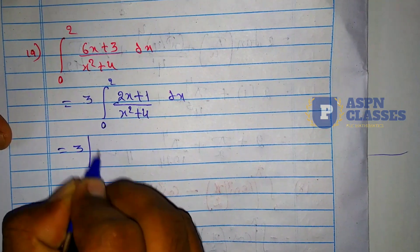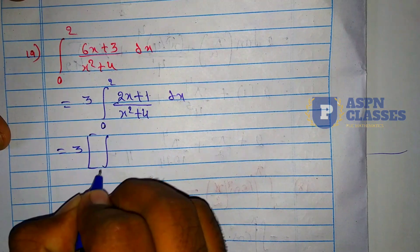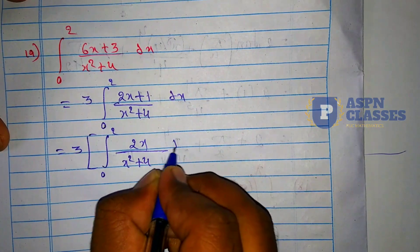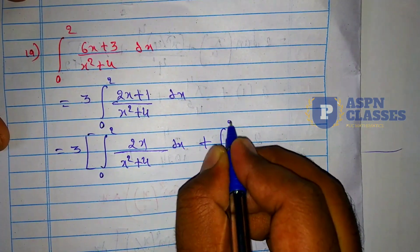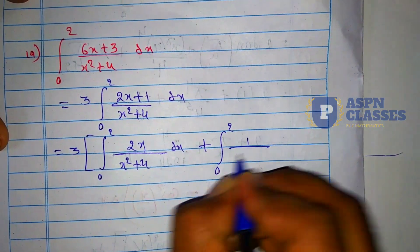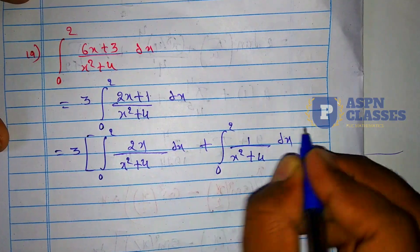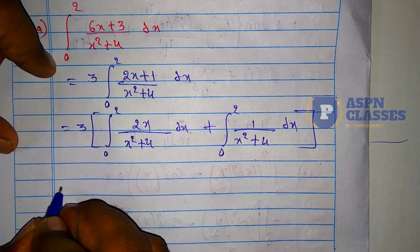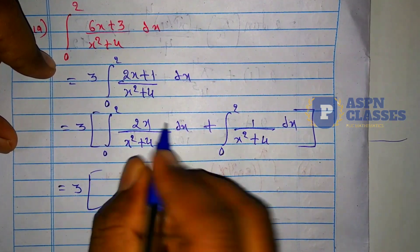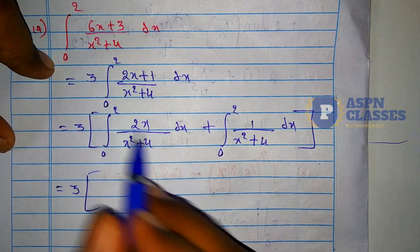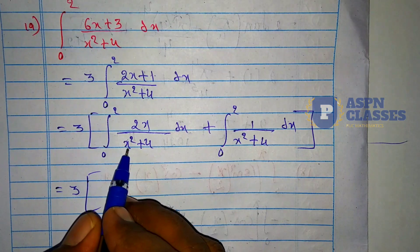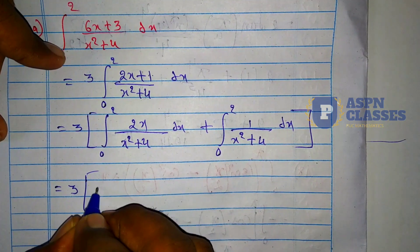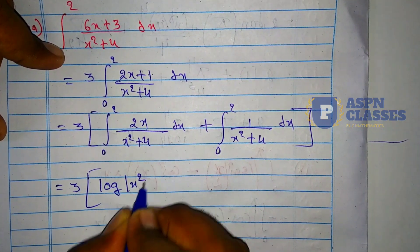We split the integral into: 3 times integral from 0 to 2 of [2x/(x²+4)]dx, plus 3 times integral from 0 to 2 of [1/(x²+4)]dx. For the first part, since the derivative of x²+4 is 2x, this integrates to log|x²+4|. For the second part, using the formula 1/(x²+a²) which integrates to (1/a)·tan⁻¹(x/a), with a=2 we get (1/2)·tan⁻¹(x/2).